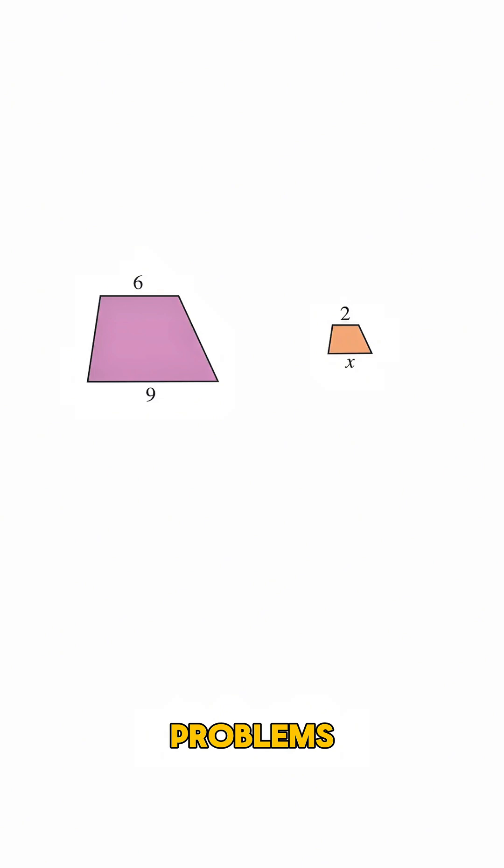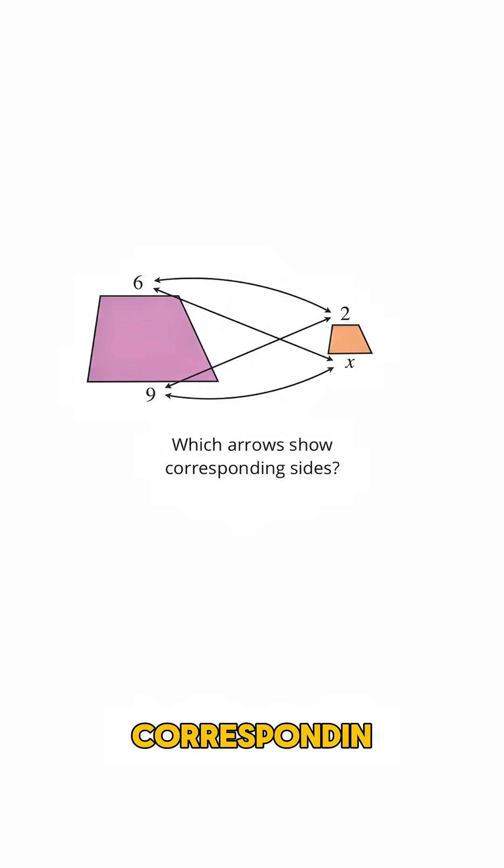The first step in solving these kinds of problems is to figure out which sides of the two shapes are corresponding. So which of these arrows here show pairs of corresponding sides? Exactly, this side of length 6 corresponds to this side of length 2, and this side of length 9 corresponds to this side of length X.